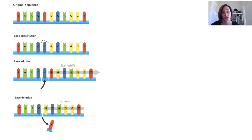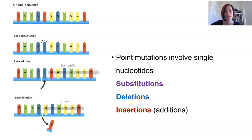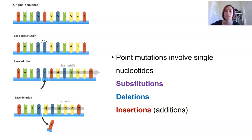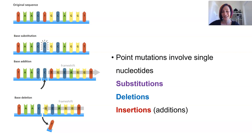Mutations that occur during cell replication may involve a single nucleotide, or many — even entire triplets can be changed. A point mutation is one that involves one single nucleotide, and these can include substitutions, deletions, or insertions of bases, and they can occur spontaneously.